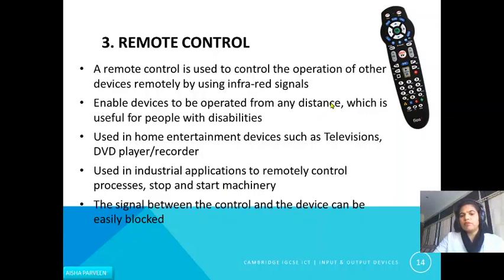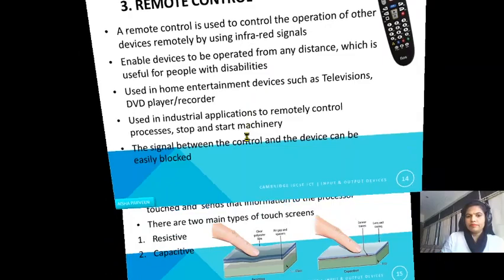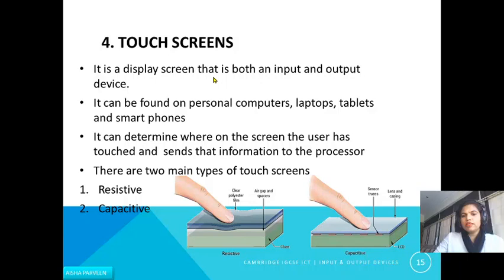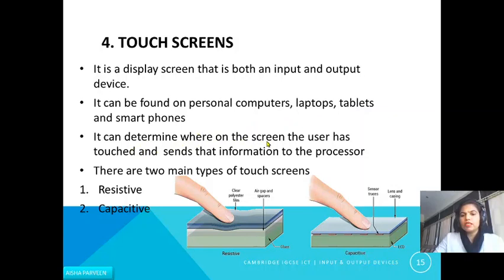The next input device is the touch screen. It is a display screen that acts as both an input and output device — you can give information and receive information on the same screen. Touch screens can be found on personal computers, laptops, tablets, and smartphones. The screen can determine where the user has touched and send that information to the processor for further processing.